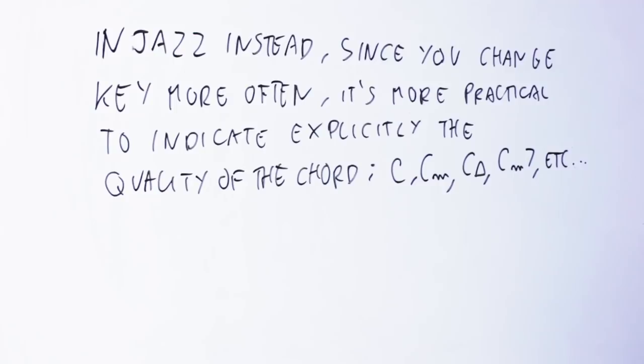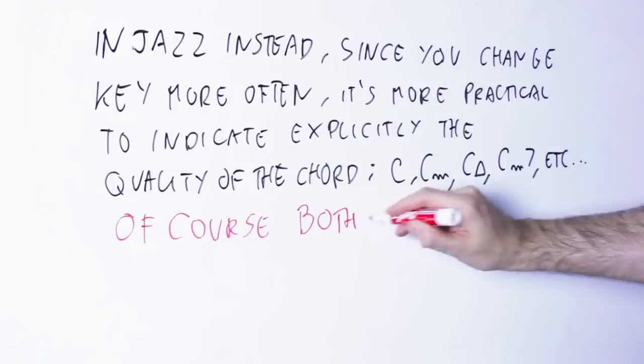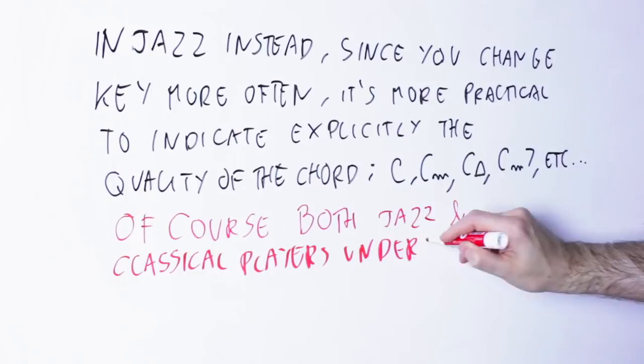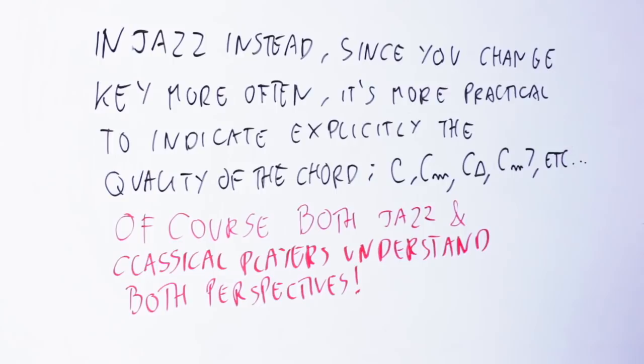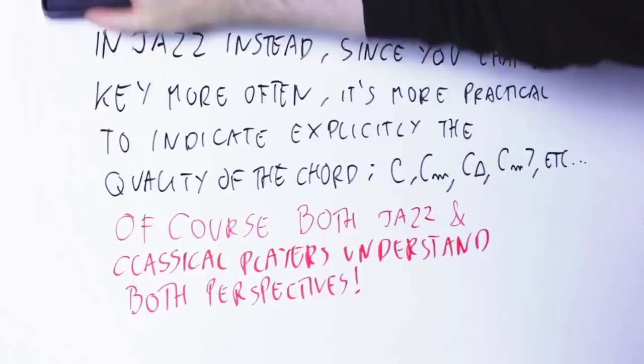So again, the two definitions of dominant chord in classical and in jazz are not exactly the same. And by the way, here I am simplifying, because both classical and jazz musicians do understand that dominant may refer to either the position of a chord in the key or to its intervallic makeup. In general, we get by by knowing in what context the term dominant was used.